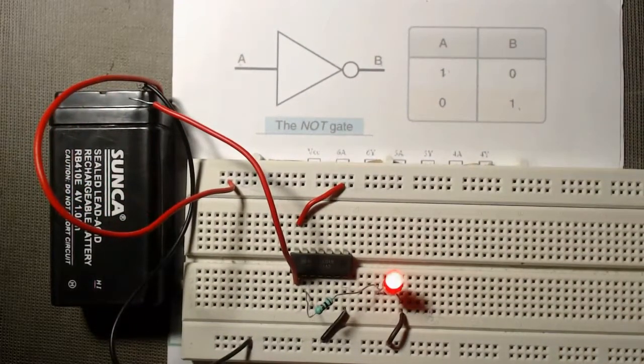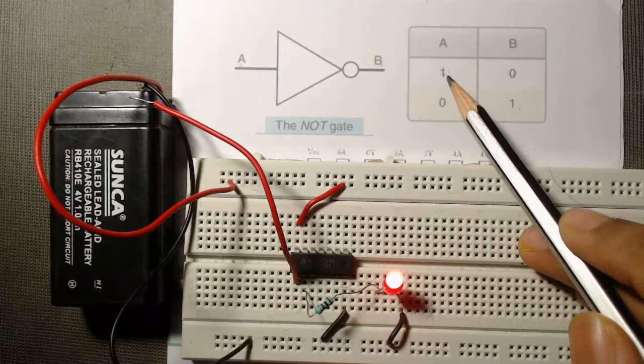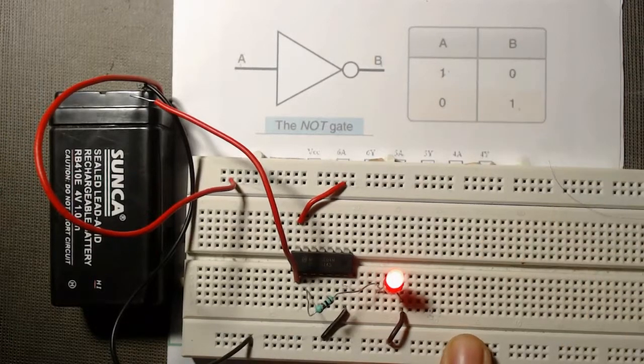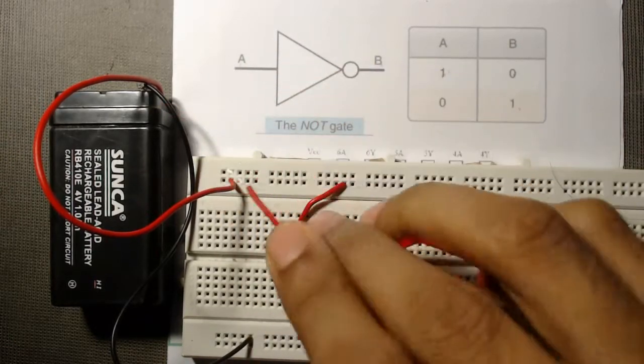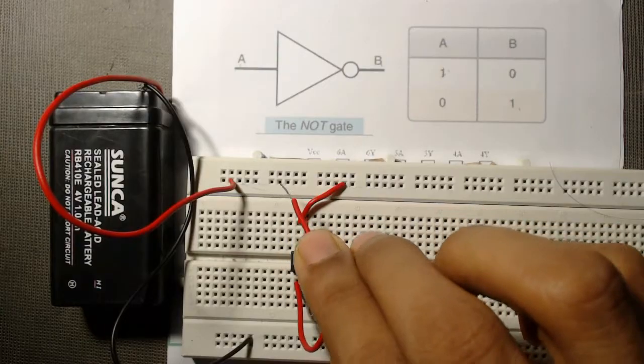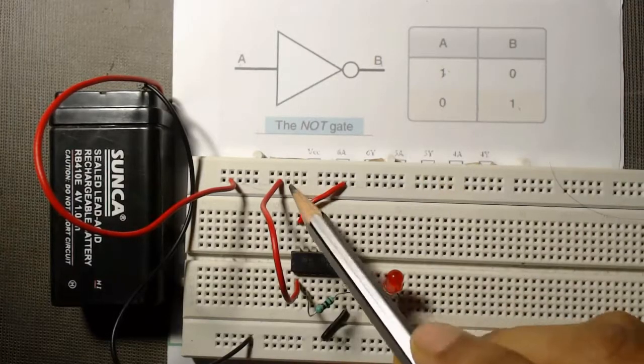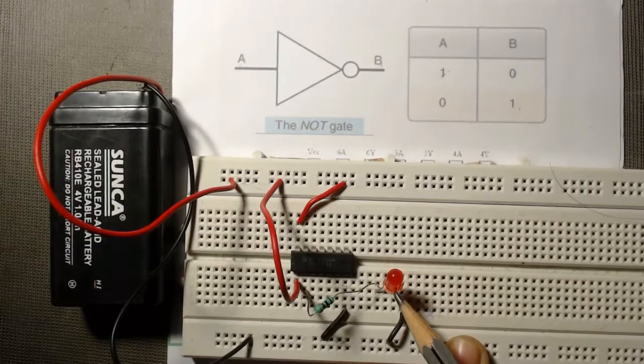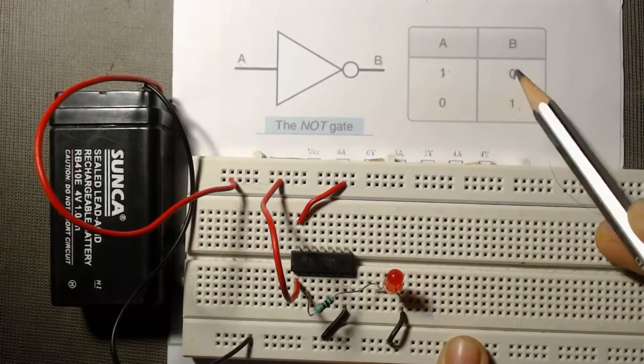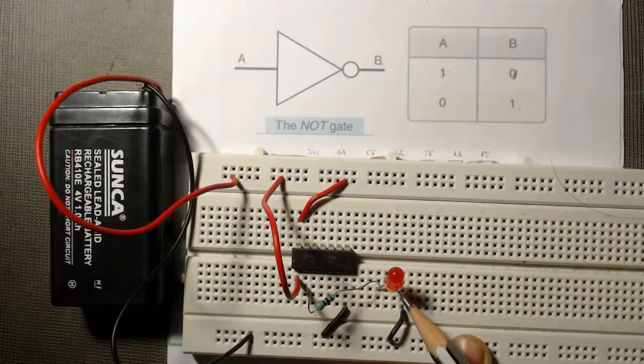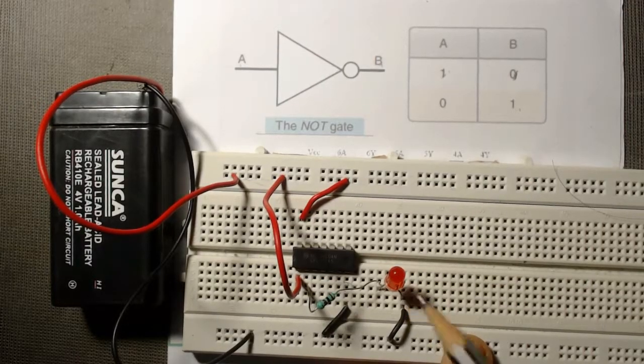Now we will observe the output from this truth table. We can see when we apply 1, 1 means we have to connect this A terminal to VCC. In this case the output is 0. Here you see 0, that means the LED is now in OFF state.